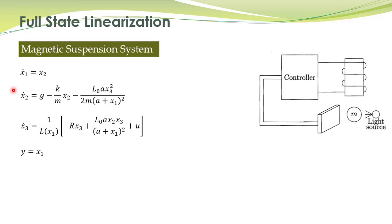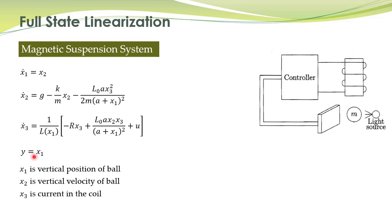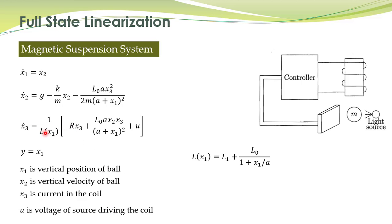For that purpose we want to obtain an exact linearization — full state linearization — of this nonlinear system. x1 is the vertical position of the ball, x2 is the vertical velocity of the ball, and x3 is the current in the coil. These are taken as state variables, and u is the voltage of the source driving the coil — that is, the voltage driving the coil is our control input. Here, this nonlinear function L of x1 is given.